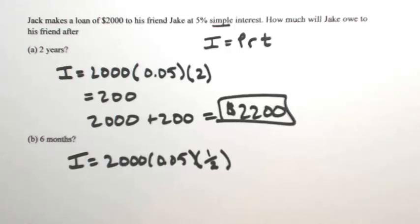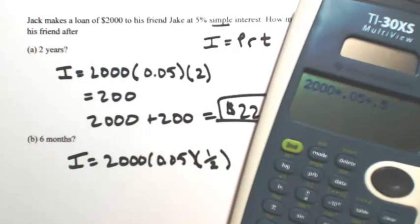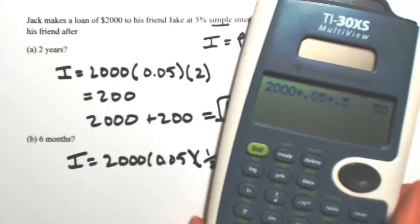If it was three months, that would be a quarter of a year, and so on. So multiplying this together, $2,000 times 0.05 times 0.5, we're going to get $50.